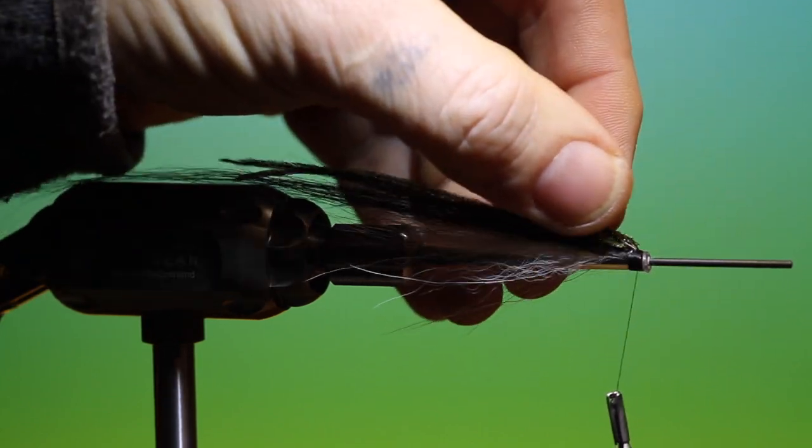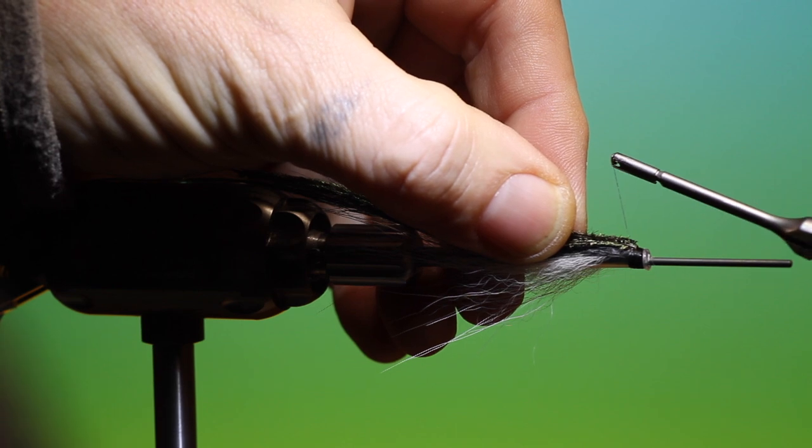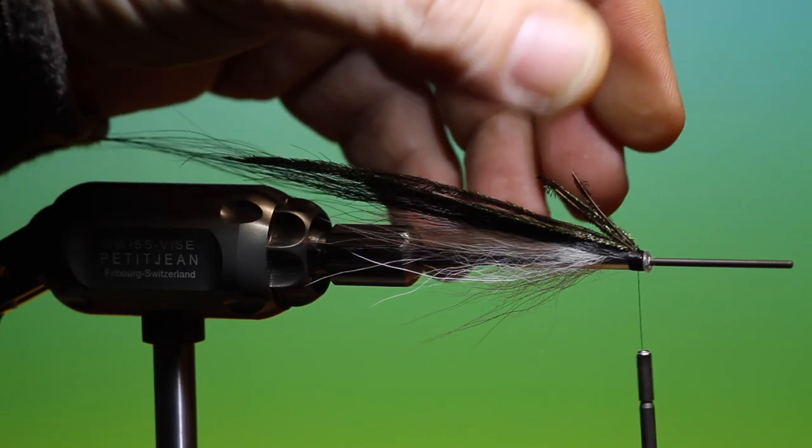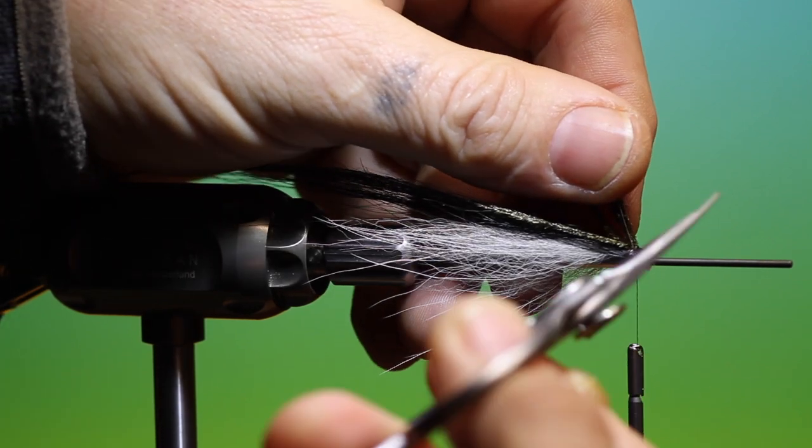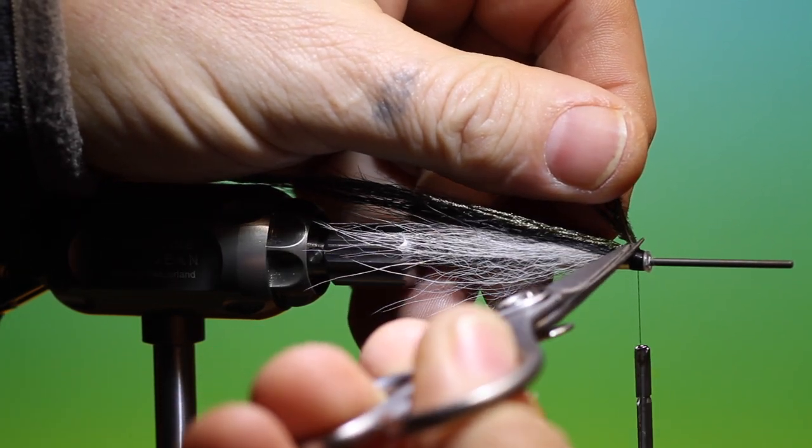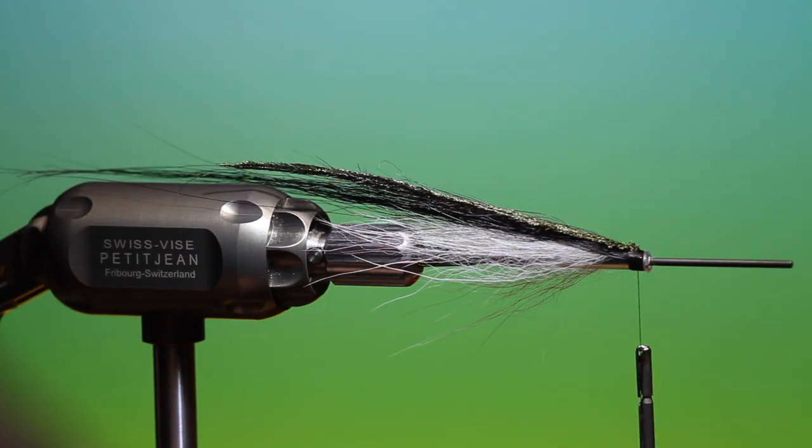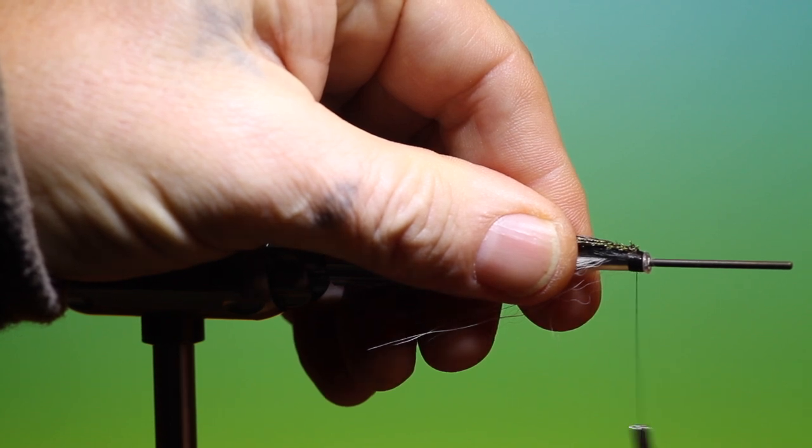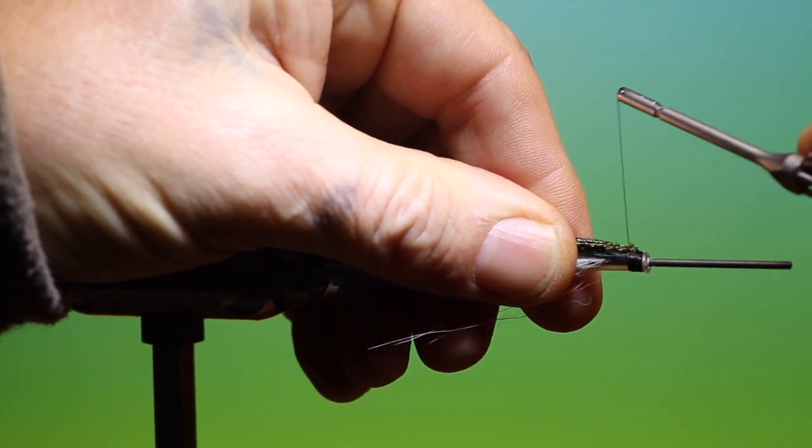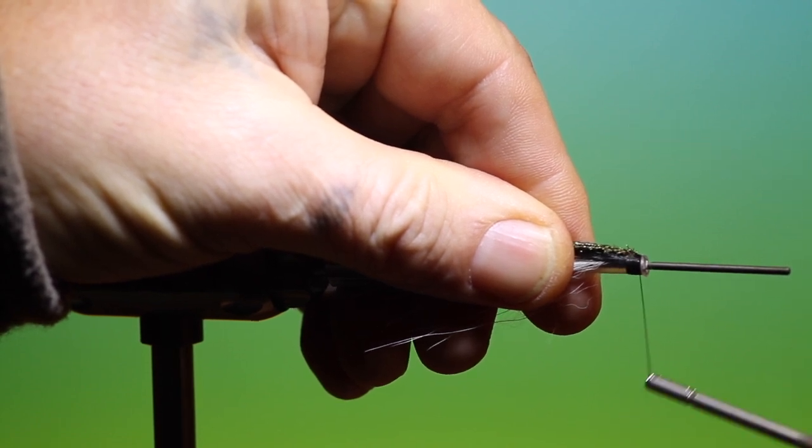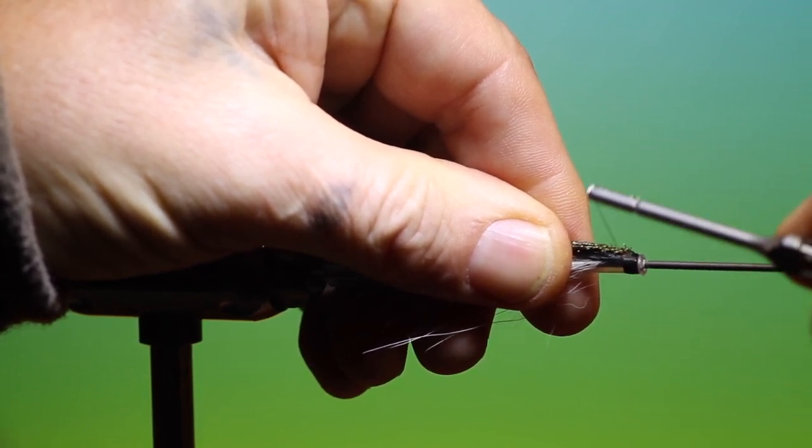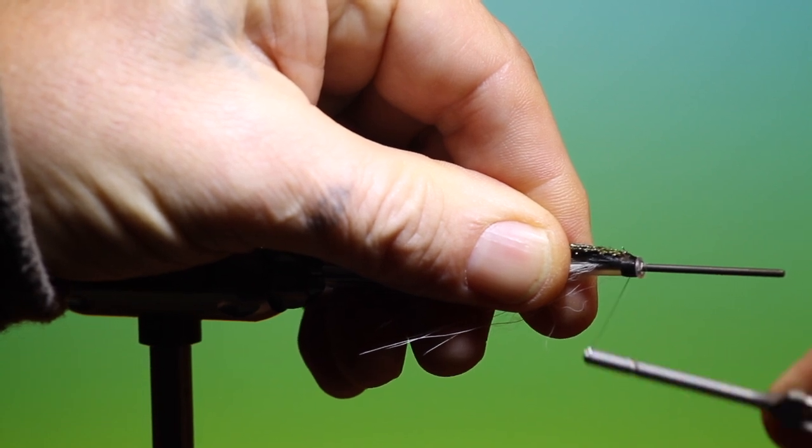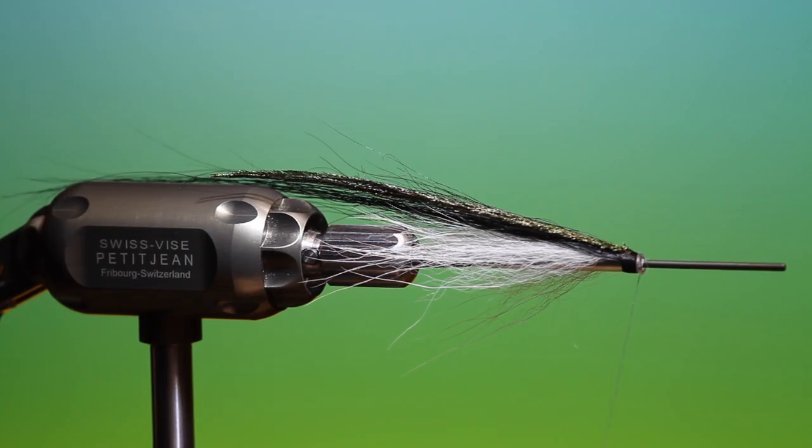And then we bend these over. And we make a couple of turns of tying thread on top. And then we can just trim those off. And I'll spin my tying thread anti-clockwise to flatten it. And go over the ends of the peacock hull. Like so.